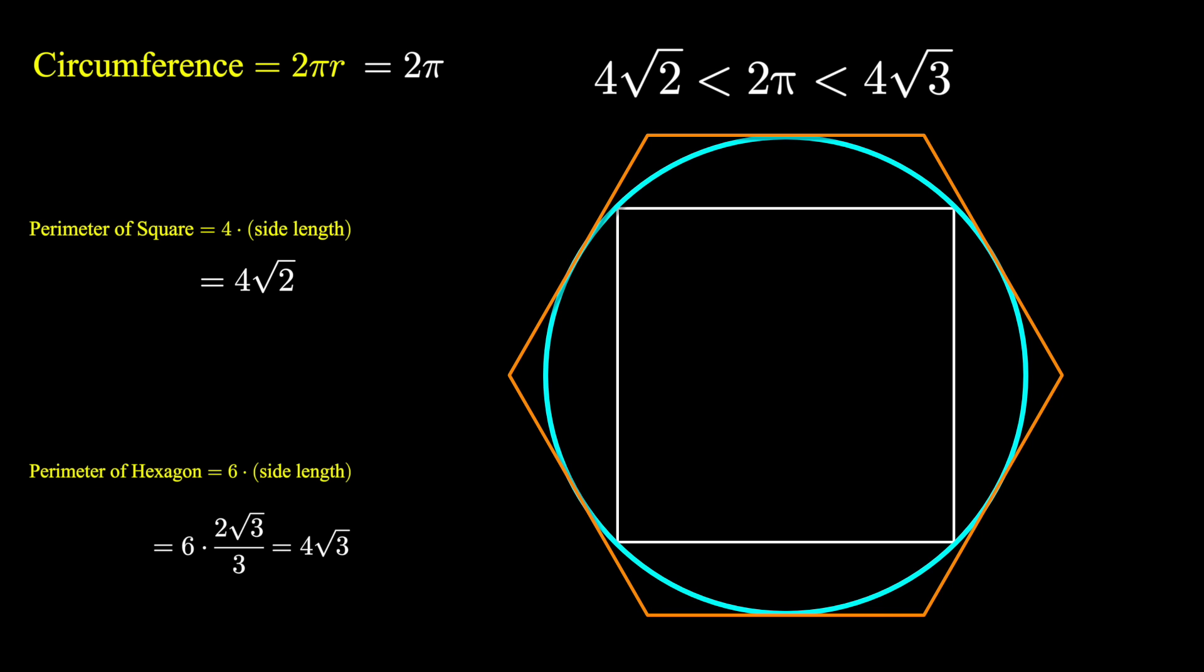And setting it up in this way, we might even say that the perimeters of the square and the hexagon are approximations to the circumference of the circle.